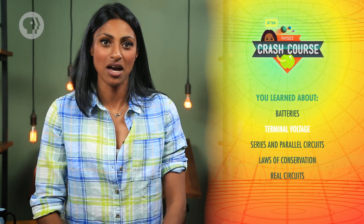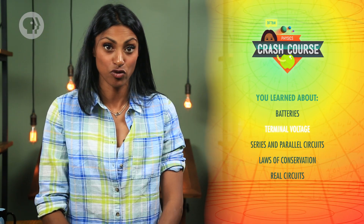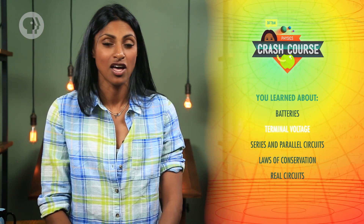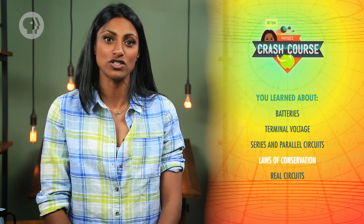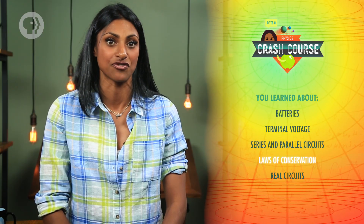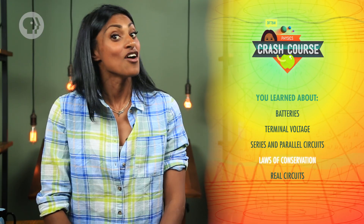We've already got the tools to solve most circuit arrangements that you'll encounter, so next time we'll look at some key examples mathematically and electrically — so don't forget to bring your light bulbs. Today we learned about batteries and how terminal voltage results from the natural internal resistance of every real battery. We discussed both series and parallel circuit configurations and how the laws of conservation affect the current and voltage for each. Finally, we saw how series and parallel connections affect real circuits in our light bulb circuit demonstration.